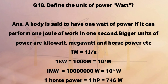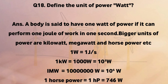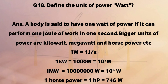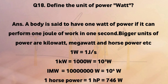Define the unit of power, watt. A body is said to have one watt of power if it can perform one joule of work in one second. Bigger units of power are kilowatt, megawatt, and horsepower. One kilowatt equals 1000 watts, one megawatt equals 10 million watts, and one horsepower equals 746 watts.